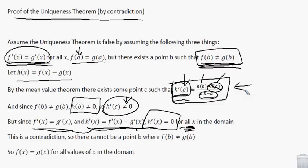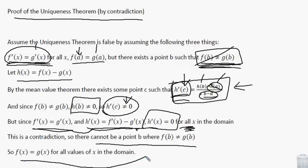But here we see a contradiction: h prime is zero for all values, and yet it's not zero at x equals c. That cannot be true — it's like saying h prime of c is zero and h prime of c is not zero. Therefore, our starting assumptions cannot all coexist. If we keep the first two assumptions, we must throw out the third. Therefore, there cannot be a point where f does not equal g, meaning f equals g for all values. And that's the proof of the uniqueness theorem.